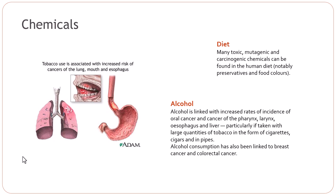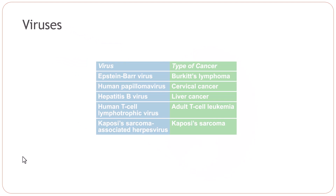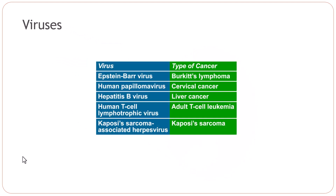Diet — what we eat — is also relevant. Many toxic, mutagenic, and carcinogenic chemicals can be found in the human diet, notably preservatives and food colors. There are also certain viruses linked with cancers. For example, Epstein-Barr virus is linked to Burkitt's lymphoma, human papillomavirus is linked to cervical cancer, and hepatitis B virus is linked to liver cancer.